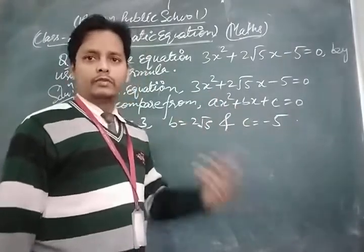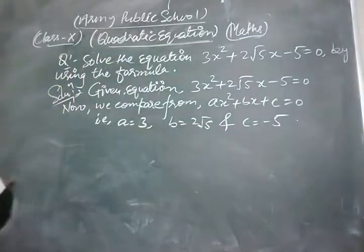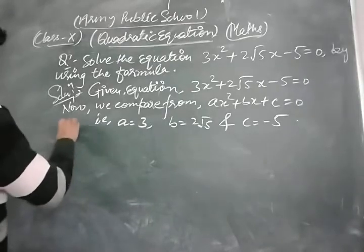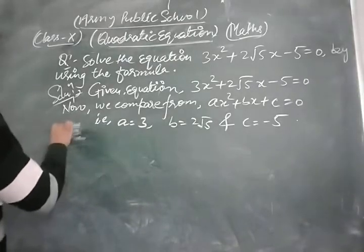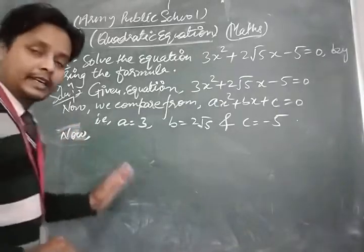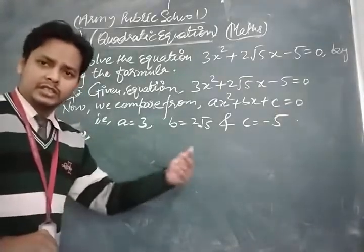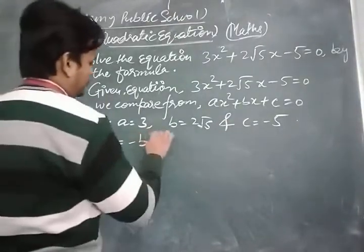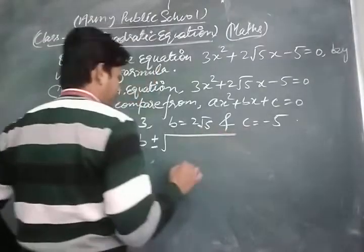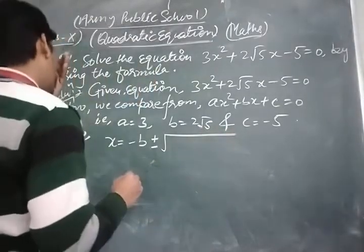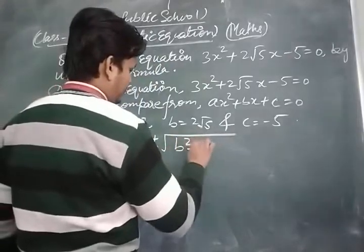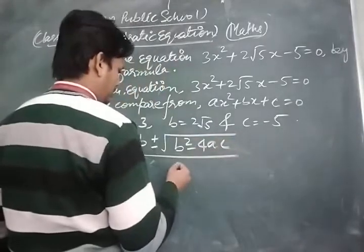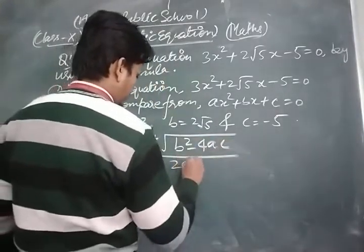Now we solve the given equation by the formula. The quadratic formula is: x = (-b ± √(b² - 4ac)) / 2a. We now put all the values into this formula.